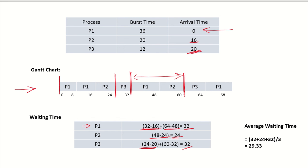Computing the average waiting time, we add the wait times of all processes — 32, 24, and 32 — and divide by the number of processes, which comes out to 29.33 time units.